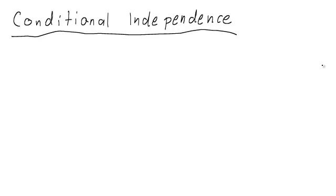Let's talk about conditional independence. We say that two random variables X and Y are conditionally independent.